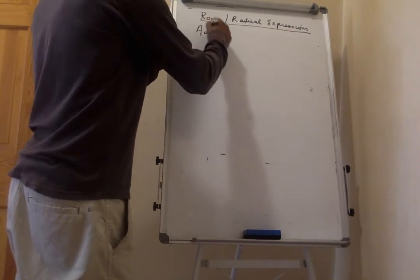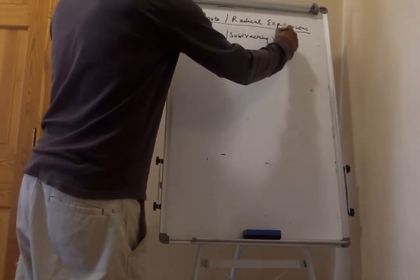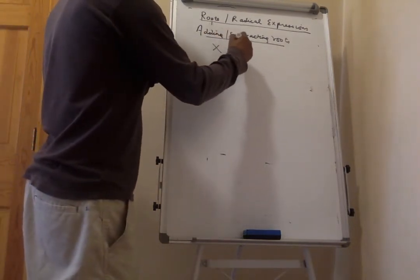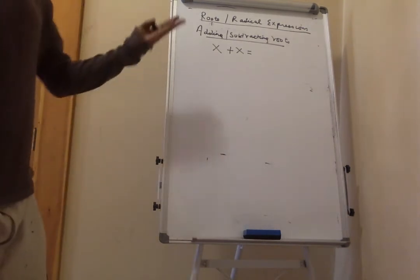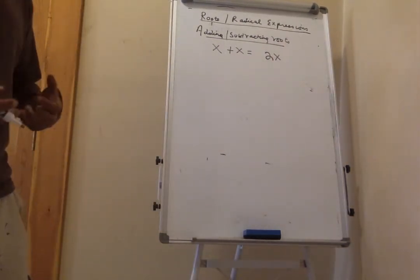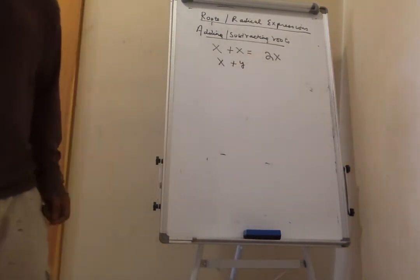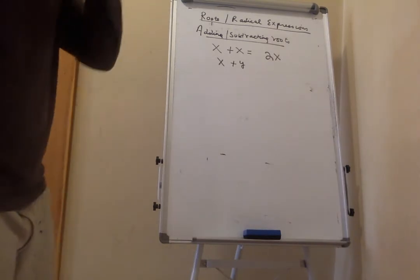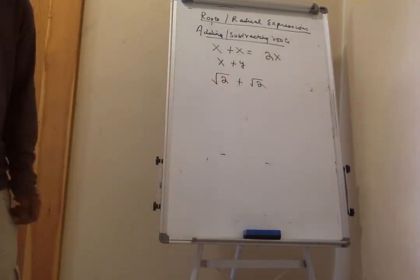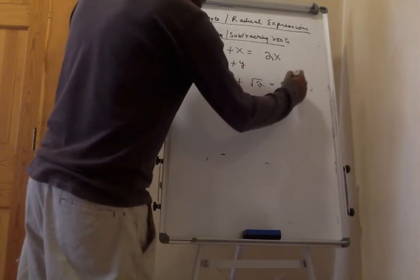Adding and subtracting roots: if you add x plus x you have 2x. The same logic applies to square roots. The square root of 2 plus the square root of 2 — how many square roots of 2 do you have? Two of them. Because they have the same value, you add them to get 2 times the square root of 2.